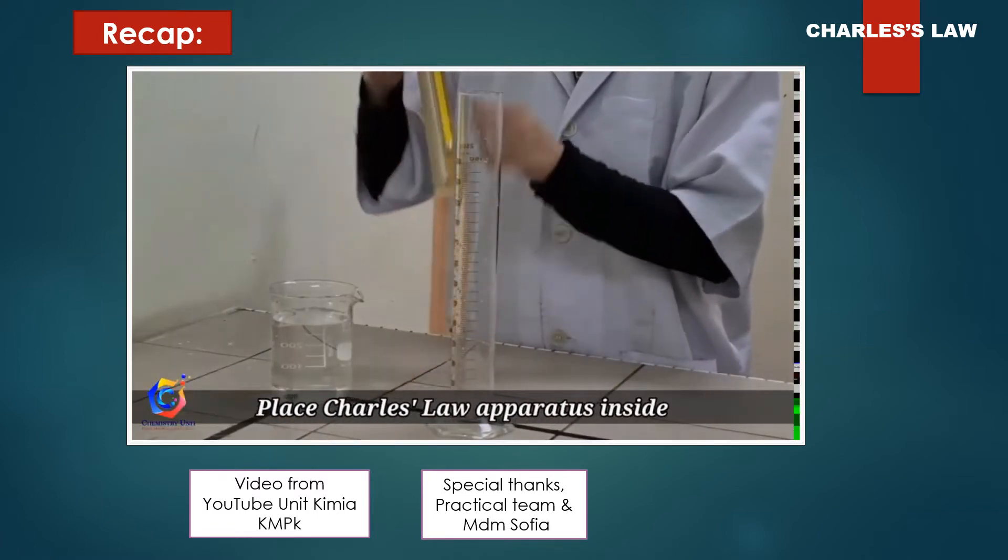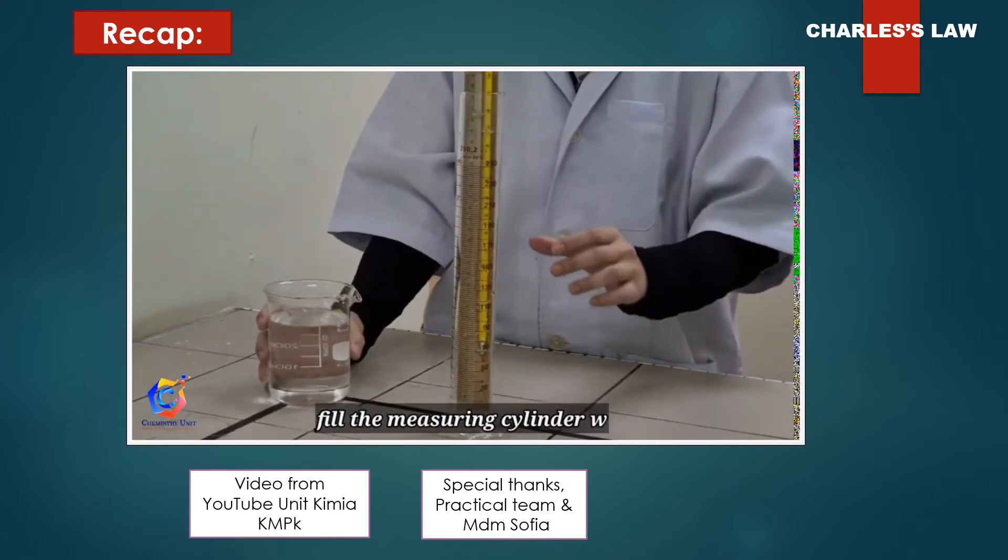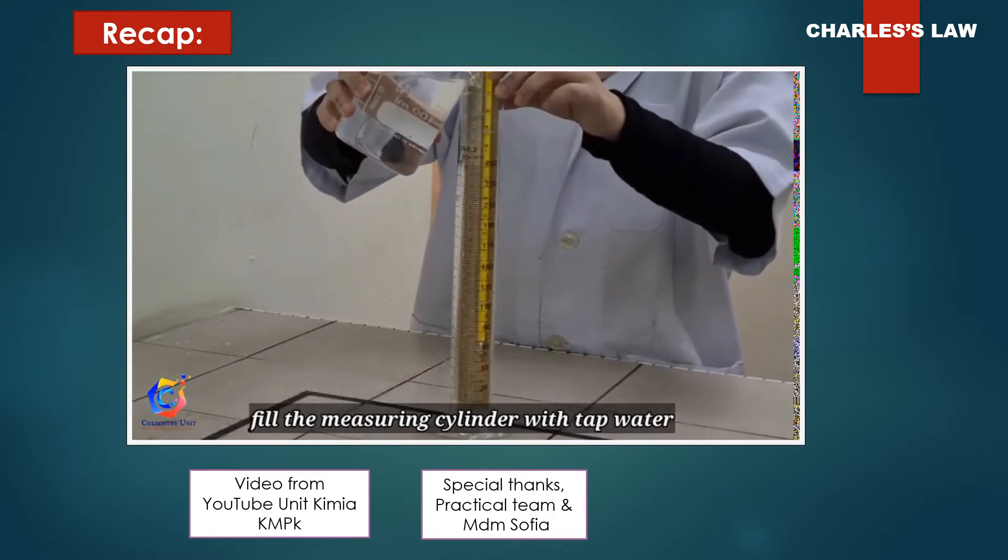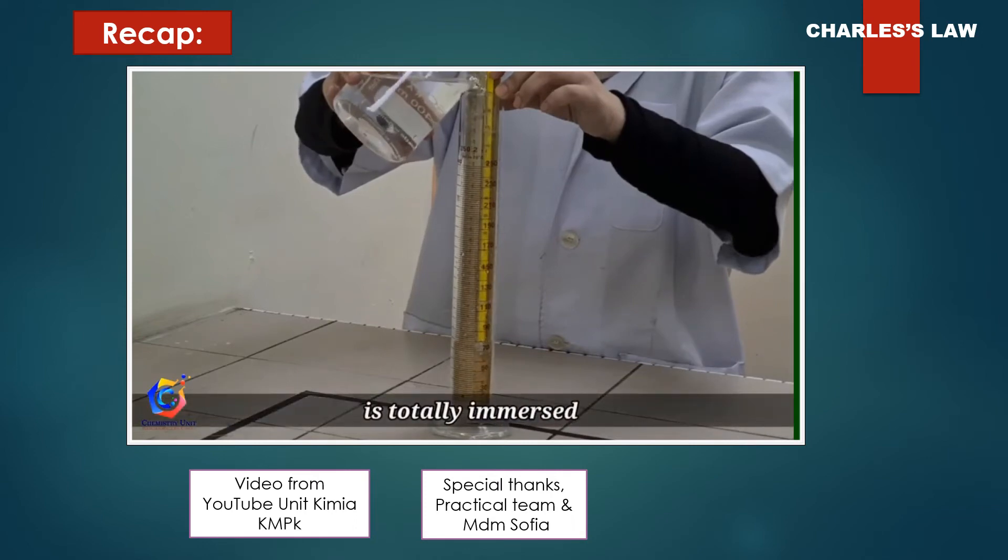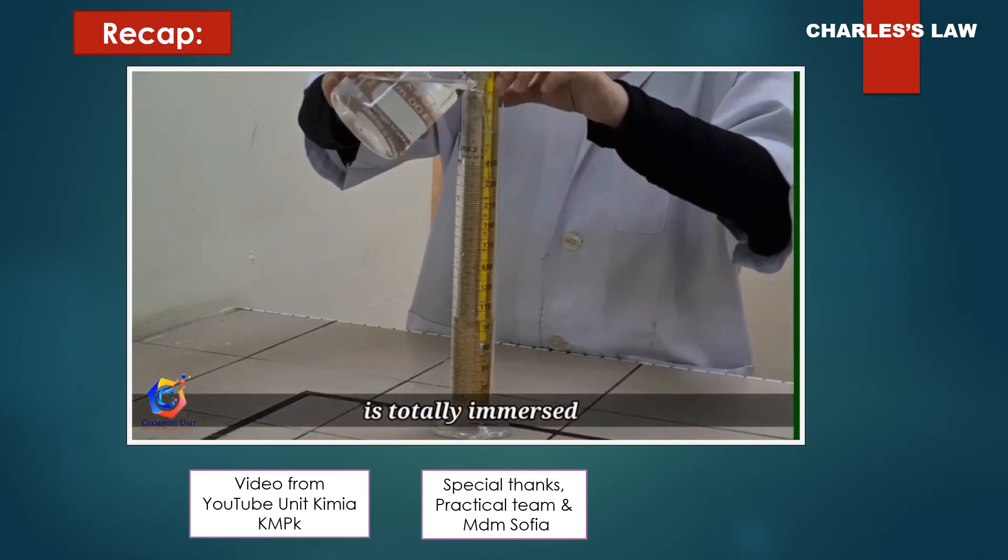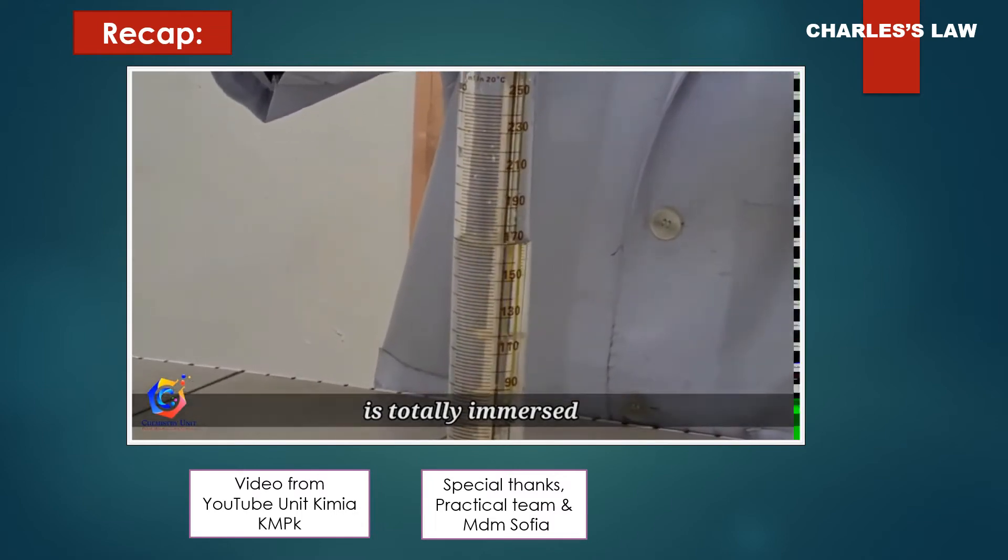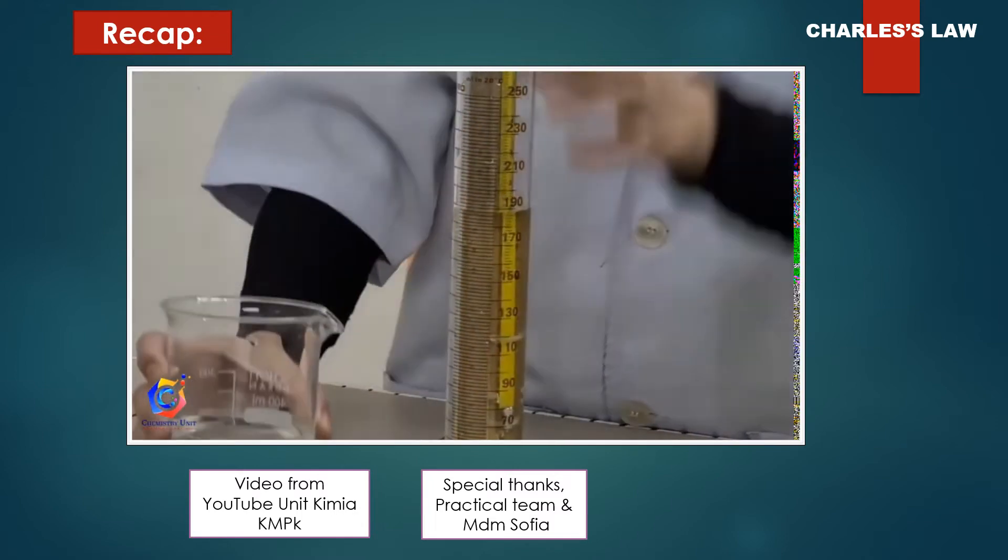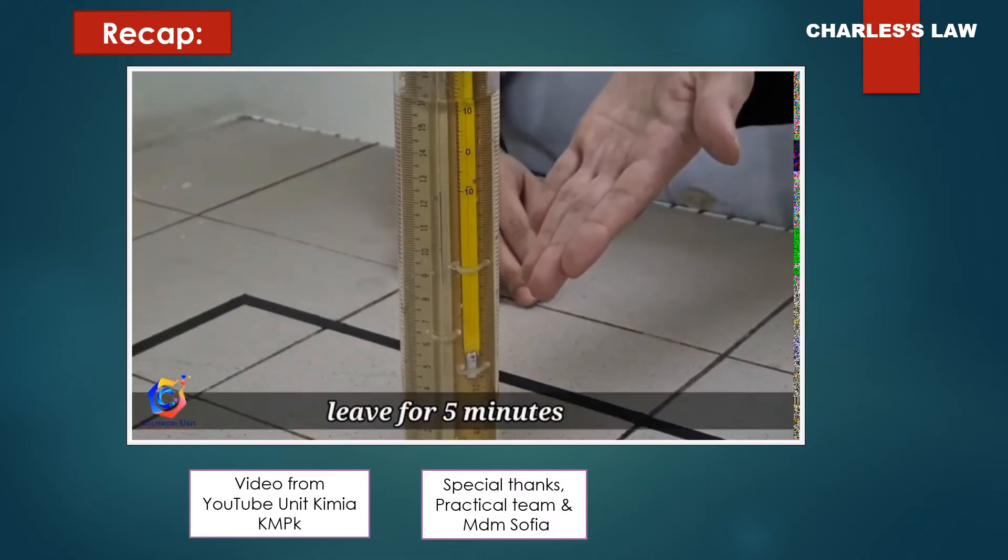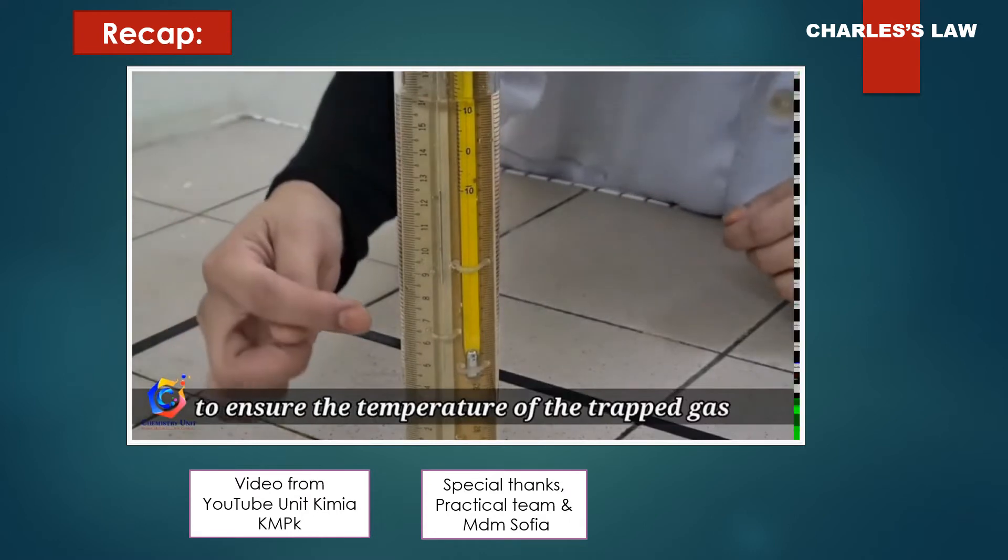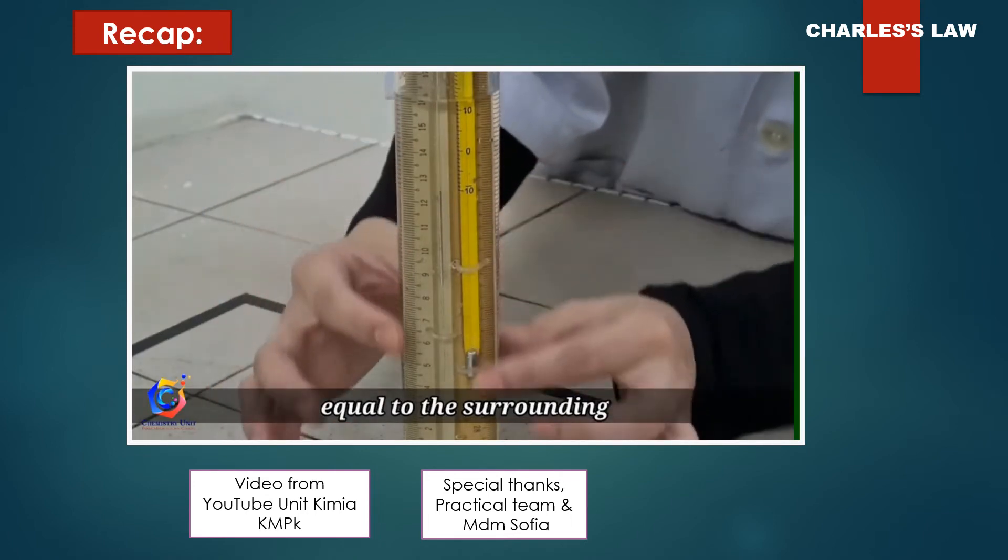Okay, done! Place the Charles's law apparatus inside a 250 ml measuring cylinder. Fill the measuring cylinder with tap water until the gas column inside the tube is totally immersed. Leave it for 5 minutes.